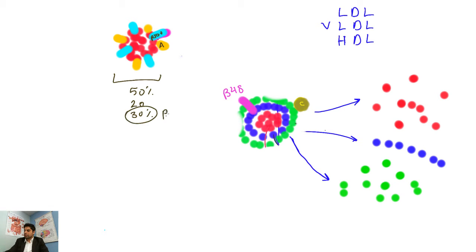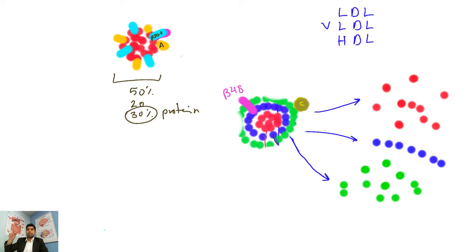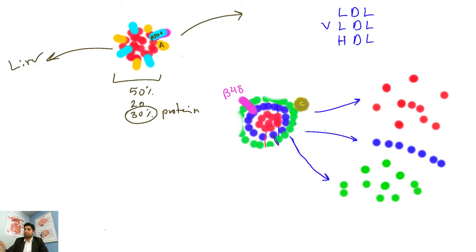If you put protein in water versus lipid in water, protein sinks because it's more dense. When we say low density lipoprotein, it's still a lipoprotein — made of lipids and proteins — but in LDL there's more lipid and less protein, especially cholesterol. So LDL is a major cholesterol carrier in plasma.